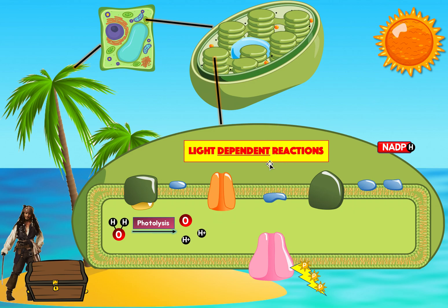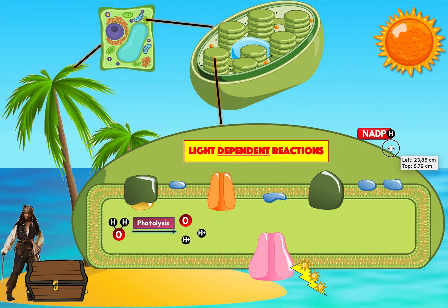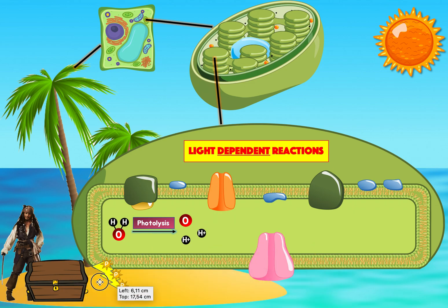The light-dependent reaction creates two important products: NADPH and ATP. Both of these products are created right outside of the thylakoid, because the thylakoid structures were used to make them. Right outside of the thylakoid are all these empty spaces called the stroma. We're going to take these two molecules and use them in the light-independent reaction.